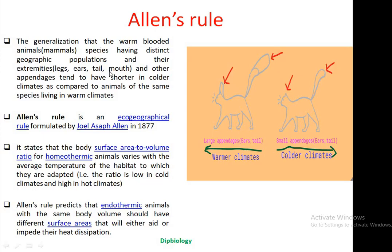Hello friends, welcome back to my channel Deep Biology. Today we will learn about Allen's Rule, which is an important ecological concept. This rule is actually an extension of Bergmann's Rule — the link to the Bergmann's Rule video can be found in the description section. Allen's Rule was formulated by Joel Asaph Allen in 1877 and is an eco-geographical rule.